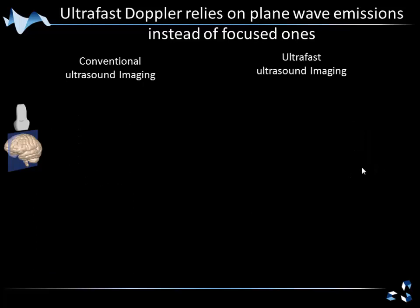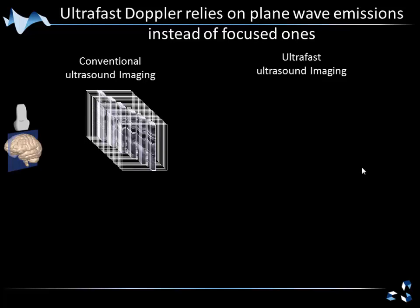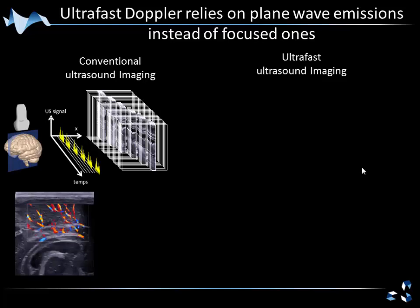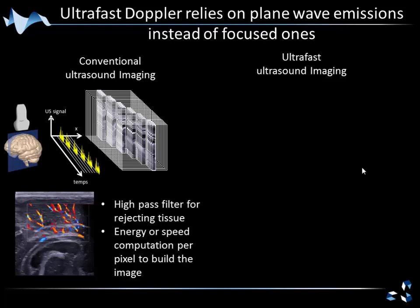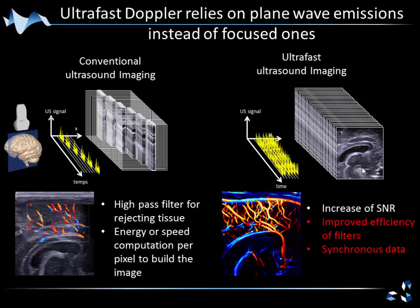This change implies a lot for Doppler imaging. In conventional Doppler, you collect a few samples per location and move to the next, so you have only a few samples per pixel. This is enough to detect large blood flow, but not very sensitive. In ultra-fast imaging, you build images continuously, so virtually you could have an infinite number of samples in every location, which increases the signal-to-noise ratio.